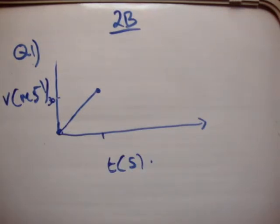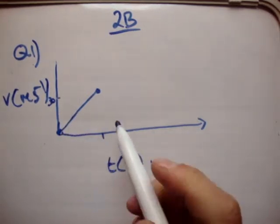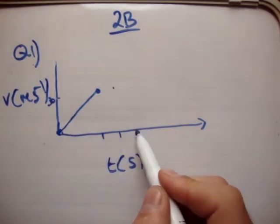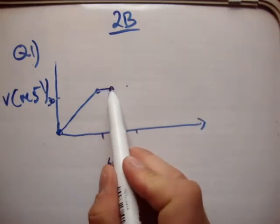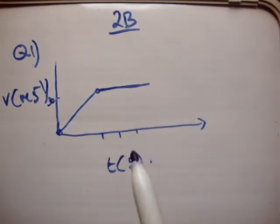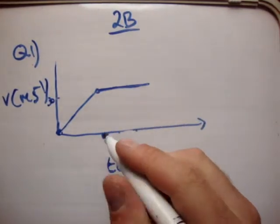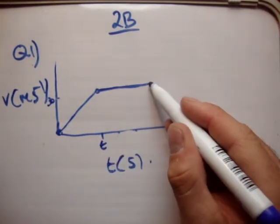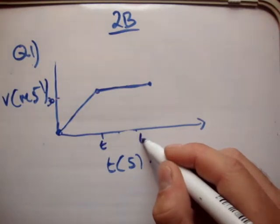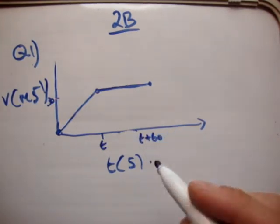It then travels at a uniform speed of 30 meters per second. If it's uniform speed, it's not accelerating, therefore it's staying at 30. So here it's 30, here it's 30, and so on. So let's just draw a straight line like that. And it does that for 60 seconds. So this is, let's say this was t, then here is t plus 60, like that.